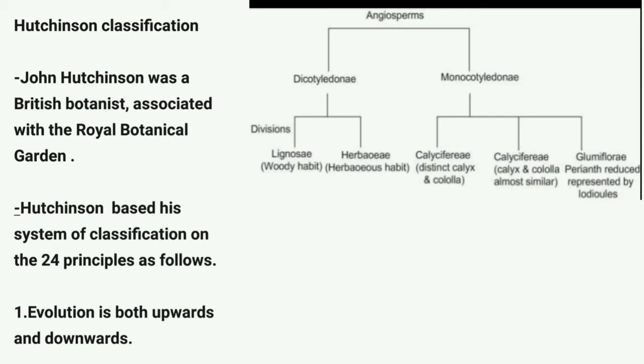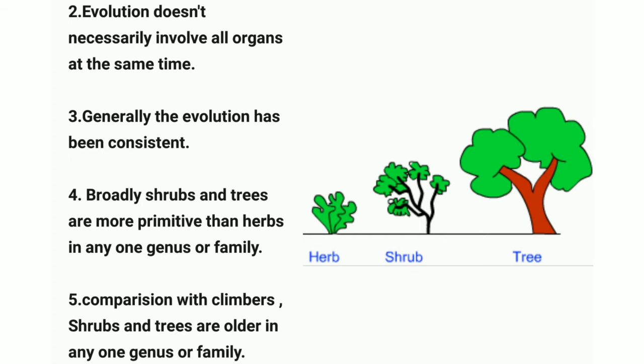Hutchinson's system of classification is based on 24 principles. The first principle is that evolution is both upwards and downwards — the development of living organisms involves changes proceeding over history. The second principle is that evolution does not necessarily involve all organs at the same time. The third principle is that generally evolution has been consistent and does not contain any logical contradictions.